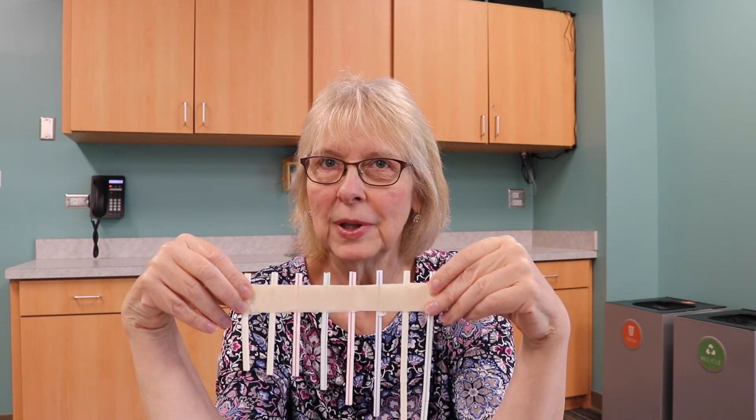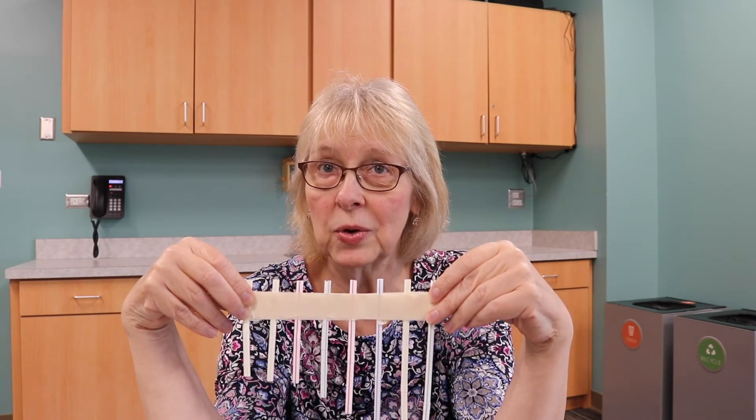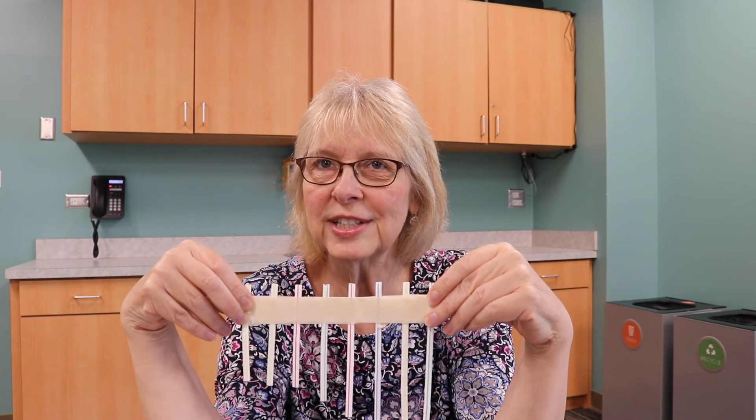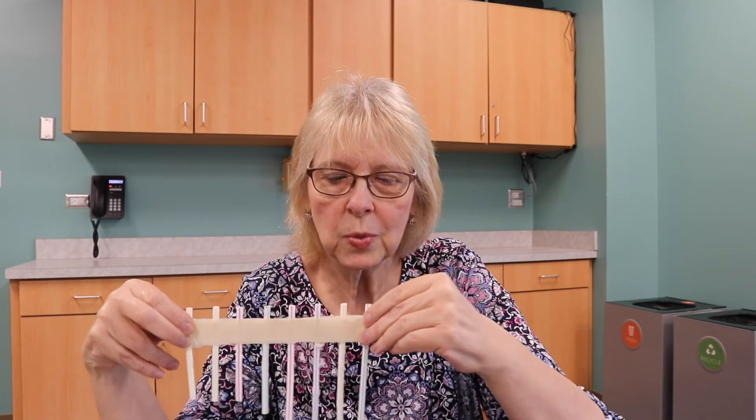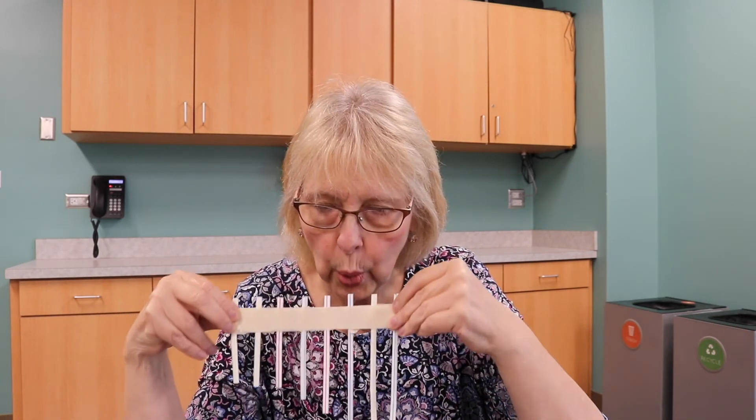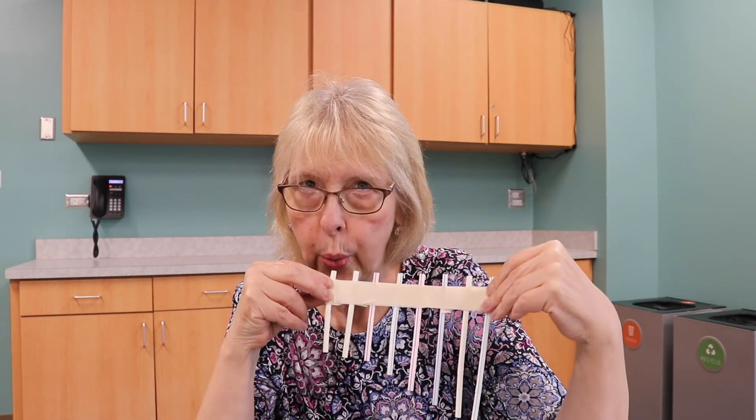Okay, hold your instrument, which is called a pan pipe, below your lips with the uneven ends pointing down. Practice blowing across the top of the straws as though you're blowing across the top of a pop bottle. You should hear different sounds from each straw. Here's one, two, different sounds from each straw.